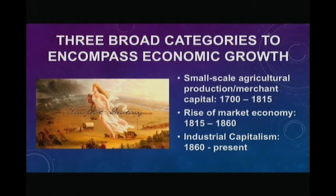As the United States expanded its westward reach, it was based on the demand by those who wished to follow the yeoman ideal — a white notion of manifest destiny — that it was their God-given right to go from the East Coast to the West Coast. The economic growth was based on small-scale agricultural production and the rise of merchant capital.